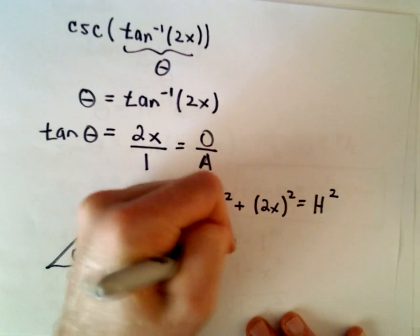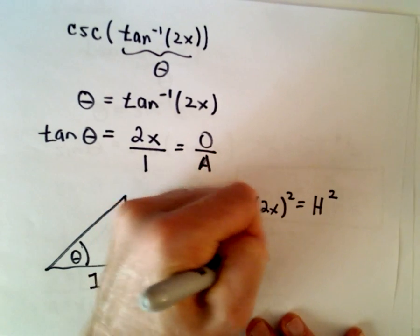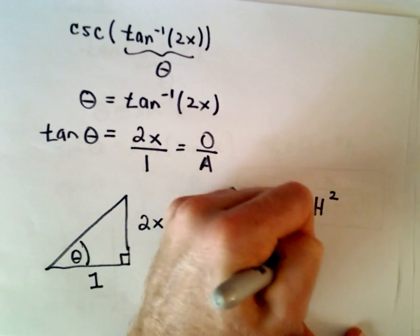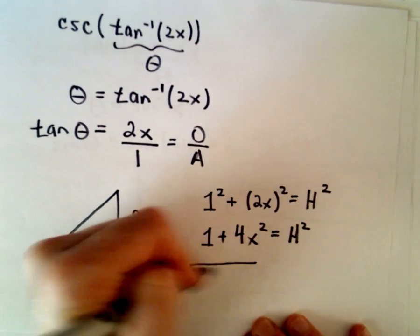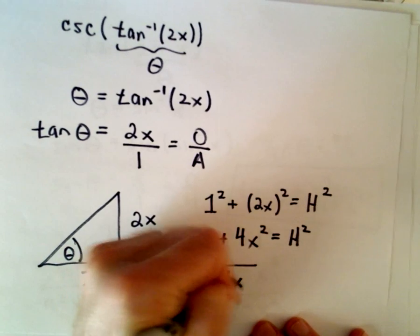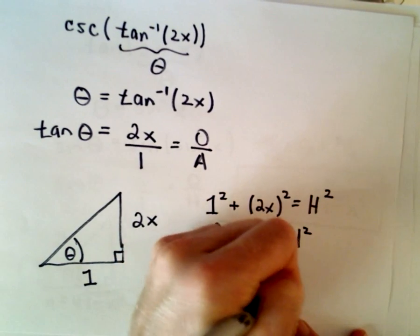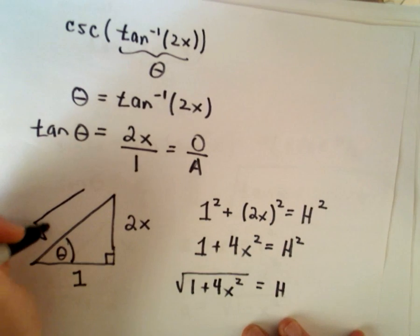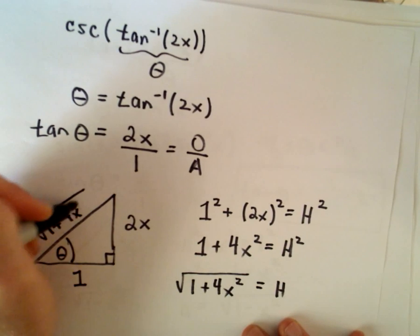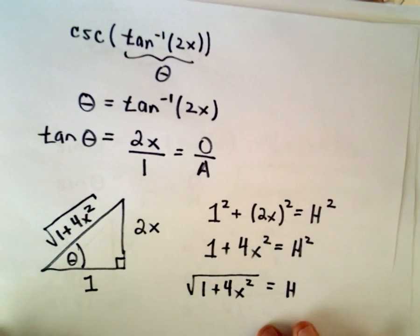Well, that's just 1 plus 2x times 2x will be 4x squared. Now we'll have to take the square root of both sides. Again, I'm going to keep it positive just because I'm thinking about it as being a length of a triangle here. So I've got 1 plus 4x squared. We're taking the square root of all of that.